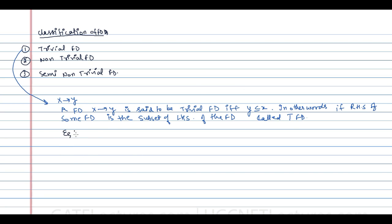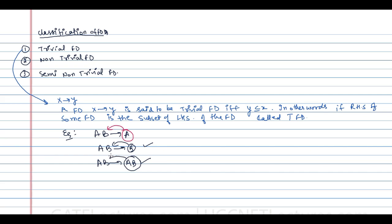For example, AB determines A — the right-hand side contains A, and A is purely a subset of AB, therefore it is a trivial functional dependency. Similarly, AB determines B — the right-hand side is a subset of AB, so it is trivial. AB determines AB is also a trivial functional dependency because AB is a subset of itself.